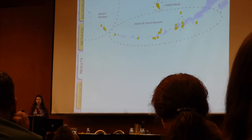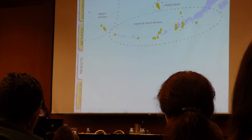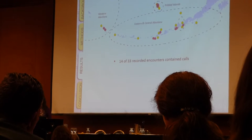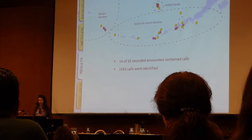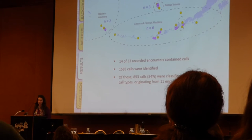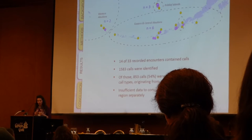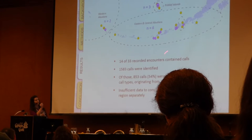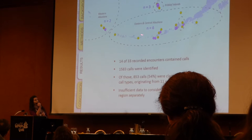So what did we find? This is a zoomed-in map where the yellow dots represent encounters with killer whales where we had acoustic recordings. 14 of those encounters contained recordings with killer whale calls, and a total of 1,583 calls were identified. Only 54% of those calls could be classified to type, so classified calls originated from 11 different encounters. I want to point out that though Parsons et al. proposed a genetically distinct subpopulation around Unimak Island, we had insufficient data to consider that region separately, so that encounter has been included in the eastern and central Aleutian analysis.